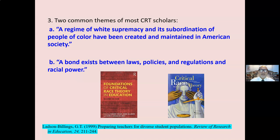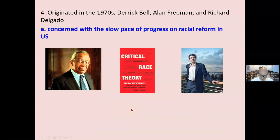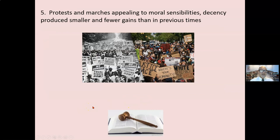And there is a bond between laws, policies, and regulations, and racial power. Critical race theory originated in the 70s with Derek Bell, Alan Freeman, and Richard Delgado. They were concerned with the slow pace of progress on racial reform in United States society, very much like today. You wonder if we've made any progress — we have, but not nearly enough. It is slowly paced.